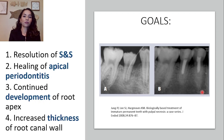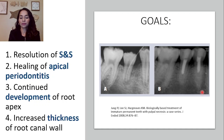There are four main goals behind regenerative endodontics. First, we want to resolve the signs and symptoms the patient is experiencing. Second, we want to heal the apical periodontitis. Third, we want continued development of the root apex. And fourth, we want increased thickness of the root canal wall.